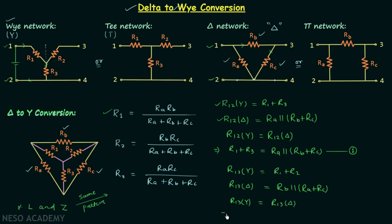Now we find the equivalent resistance between terminals 3 and 4. In the Y network, R34(Y) equals R2 plus R3. In the delta network, the equivalent resistance between terminals 3 and 4 is RC in parallel with (RA plus RB). So R2 plus R3 equals RC in parallel with (RA plus RB). Call this Equation 3.